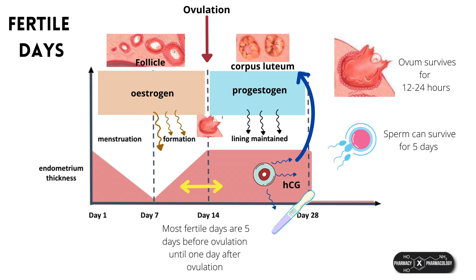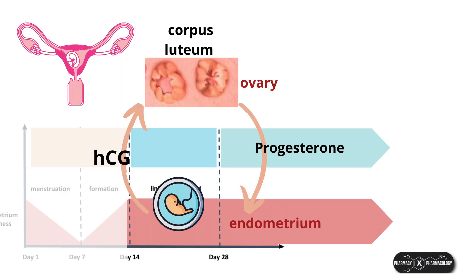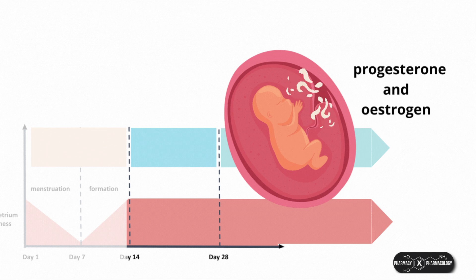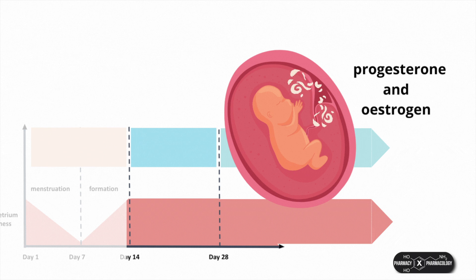Should the ovum be fertilized, it then needs to implant into the endometrium for the pregnancy to be successful. Once implanted, it will secrete human chorionic gonadotrophin, or HCG. HCG is able to maintain the corpus luteum, enabling it to continue to secrete progesterone and maintain the pregnancy. HCG is also the hormone detected by pregnancy tests. During pregnancy, the corpus luteum will continue to secrete progesterone until week 10, after which progesterone secretion is taken over by the placenta, which will also be secreting estrogen. A woman will produce more estrogen during one pregnancy than throughout her entire life when not pregnant. Progesterone and estrogen are the chief hormones of pregnancy, and they have numerous important effects on the rest of the body to support pregnancy and prepare for childbirth and breastfeeding.